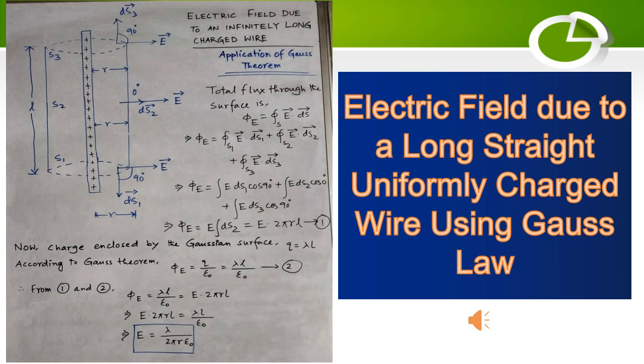Means E times the integral of ds2 will be the total flux. Now the integral of ds2 will be s2. s2 is the area of the curved surface. Since we have taken a cylindrical surface, the area of the curved surface of a cylinder is 2πrl. So flux equals E times 2πrl.